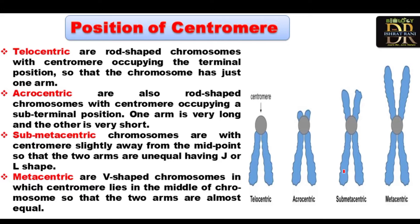The third type is sub-metacentric, in which the centromere is slightly away from the center, giving unequal arms and an L or J shape. The last type is metacentric, where the centromere is present exactly in the middle of the chromosome, giving a V shape with both arms equal in length.